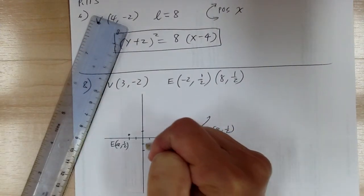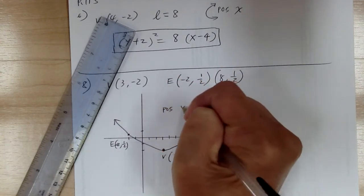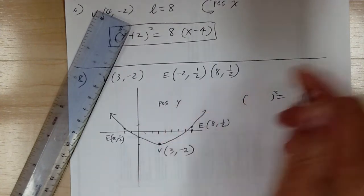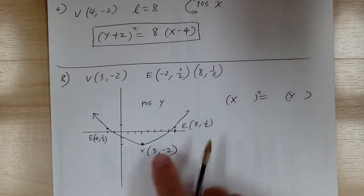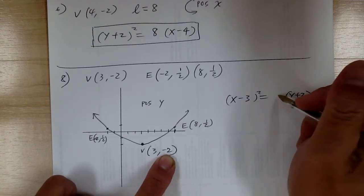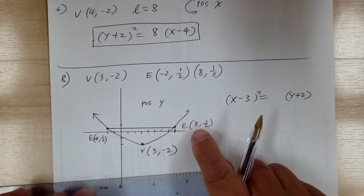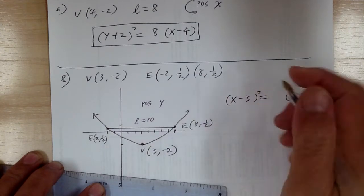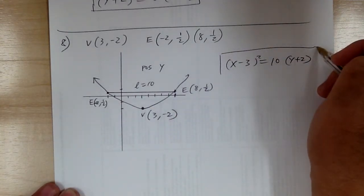From the sketch, your graph is going to go this way — positive y direction. So once you determine your direction, get your template ready. Positive y direction, so y goes over here and x goes over here. The vertex is (3, -2), so this would be minus 3, and minus negative 2 gives you plus 2. Now figure out the 4a — it's the opening at the endpoints. From negative 2 to 8, the difference is 10, so l equals 10, which is your 4a. So 10 goes over here, and that's it for number 8.